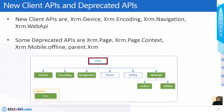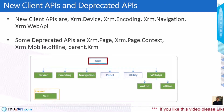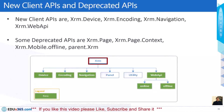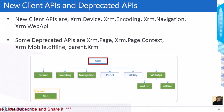The new client APIs include Xrm.Device, Xrm.Encoding, Xrm.Navigation, and Xrm.WebApi — the Xrm.WebApi is particularly popular these days. Some deprecated APIs include Xrm.Page and Xrm.Page.context.